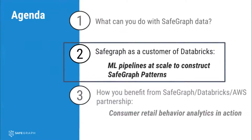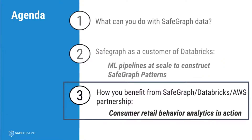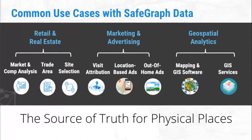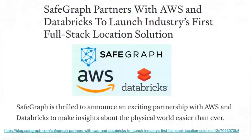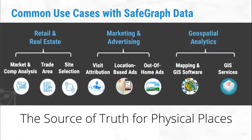That concludes the second section on SafeGraph as a customer of Databricks. Now the final section: how you as an end user can benefit from SafeGraph partnering with Databricks and AWS. As Brian mentioned, through the AWS Data Exchange program, this will be an example of using SafeGraph data to answer consumer retail behavior analytics questions. The goal is to really enable you to do this yourselves. There are many use cases of SafeGraph data across different verticals. The example I'm about to talk about is in the retail real estate bucket, but you could certainly adapt these notebooks to answer other questions.